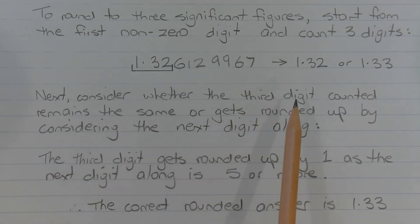Next, consider whether the third digit counted, which is the 2 in this case, remains the same or gets rounded up by 1 by considering the next digit along.